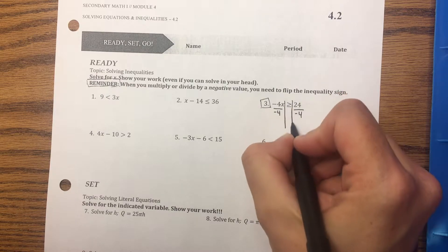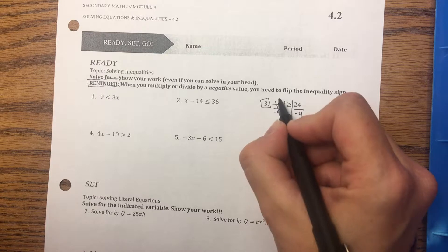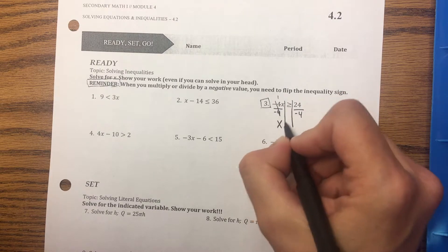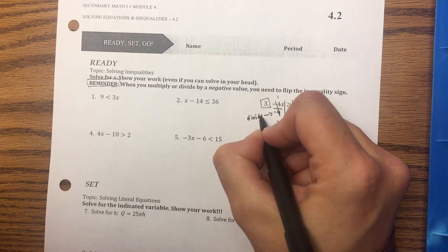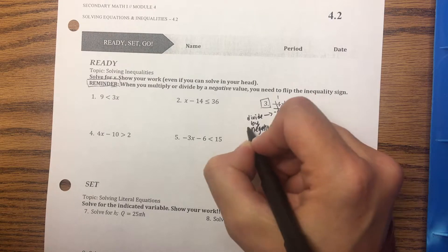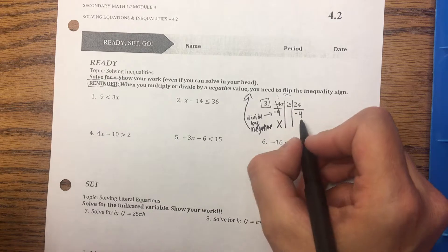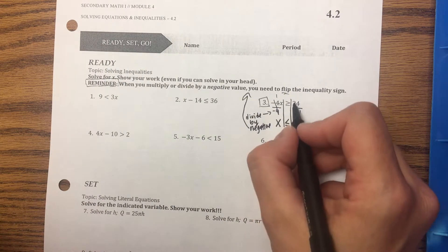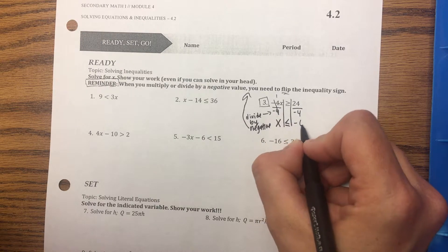Our inequalities are just like our equations with our equal sign. Now I have X, but I'll just write X. So I divided by a negative—that's what this rule is talking about. When it says flip the inequality sign, it means I need to turn it the other way. Then 24 divided by negative 4 is negative 6.